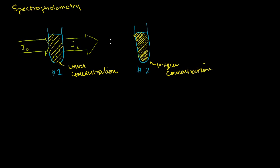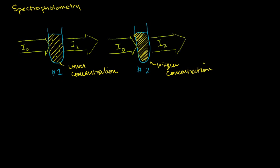Now in this situation, if we shine the same amount of light — I0 — into this second beaker, the same intensity of light, what's going to happen? Well, more of those specific frequencies of light are going to be absorbed as the light travels through this beaker. It's just going to bump into more molecules because it's a higher concentration here. So the light that comes out — I'll call that I2 — is going to have a lower intensity than I1. I2 is going to be less than I1. If you imagine photons, they're just going to bump into more molecules and be absorbed by more of them, because here the solution is less concentrated.